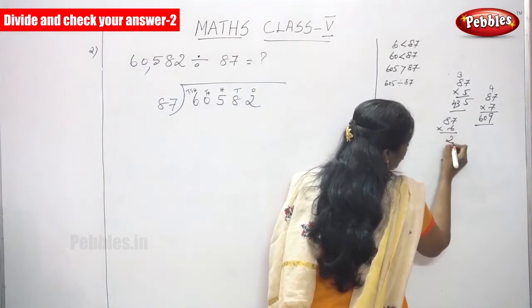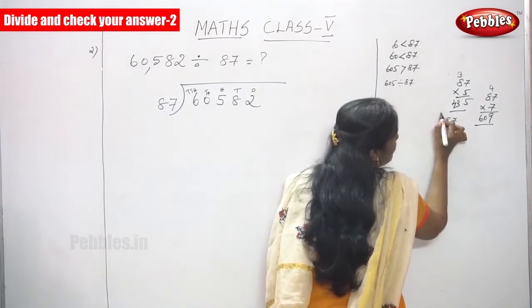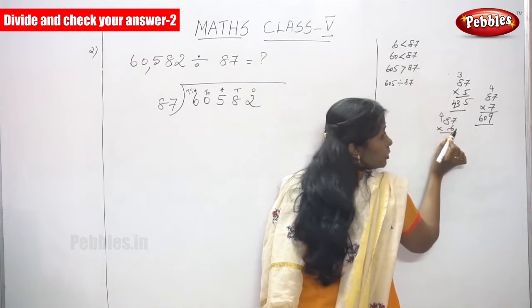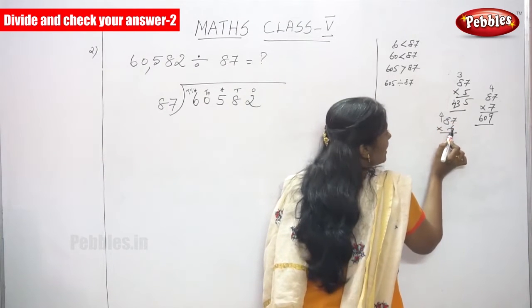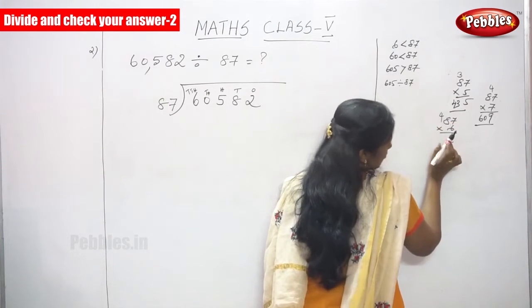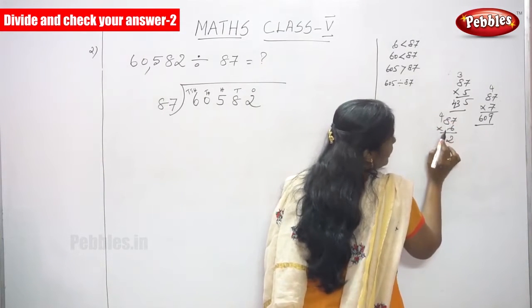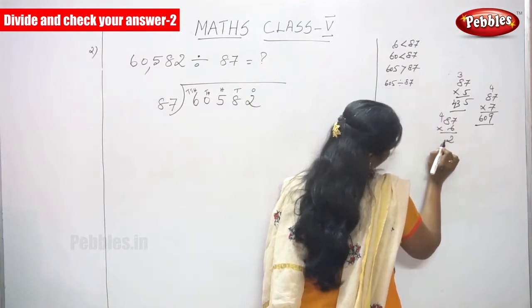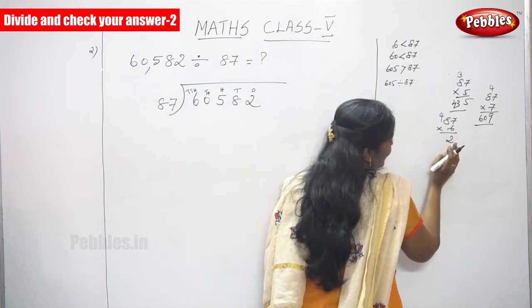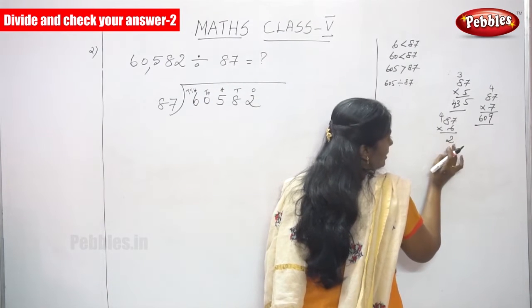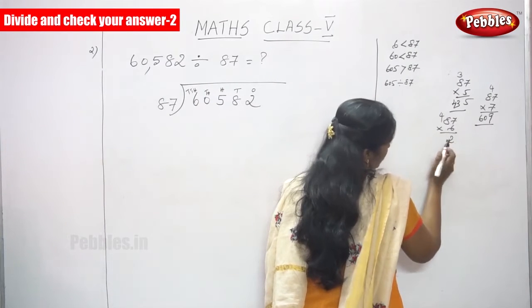6 sevens are 42, the remainder goes to the top. 6 eights are 48, 48 plus 4: 49, 50, 51, 52.